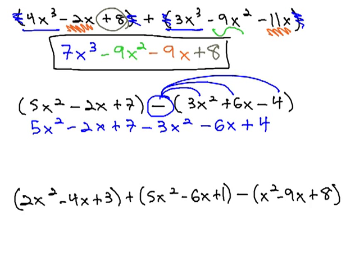After changing the signs in the second polynomial, now we're ready to combine like terms. 5x² minus 3x² is 2x².